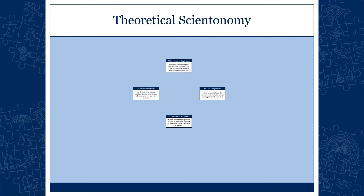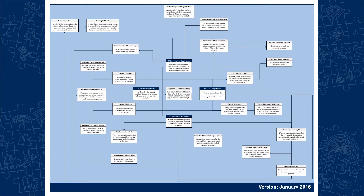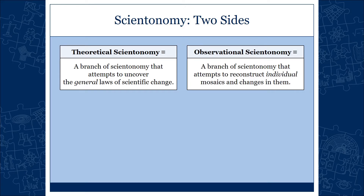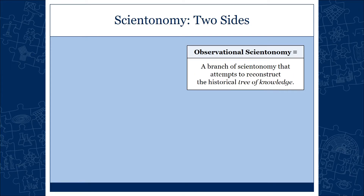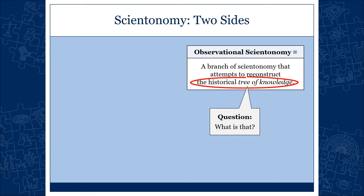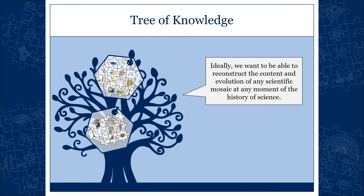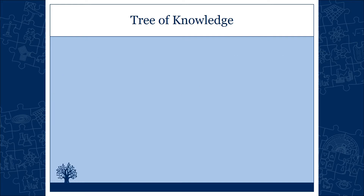We have four laws — axioms and the theorems that follow — covering many different aspects of the process of scientific change. What we don't seem to have is observational scientonomy. I think the major task of observational scientonomy is to reconstruct what can be called the tree of knowledge. Ideally, we want to be able to reconstruct the content and evolution of any scientific mosaic at any moment in the history of science.